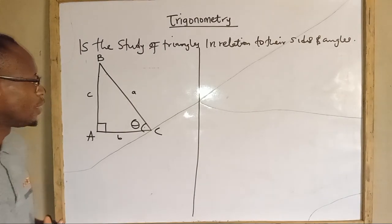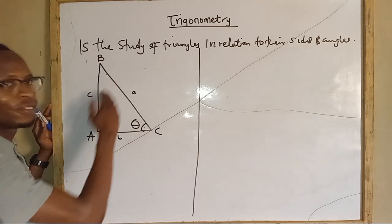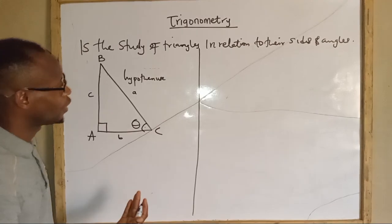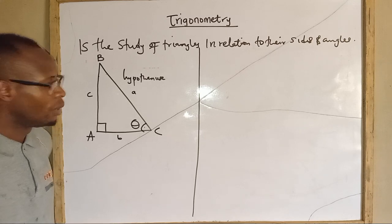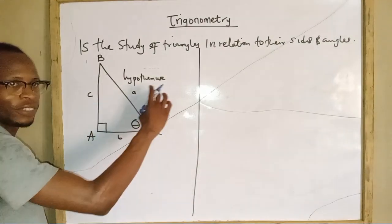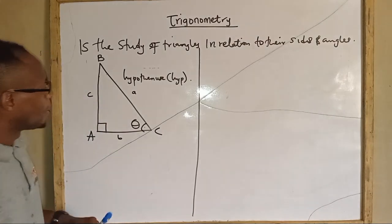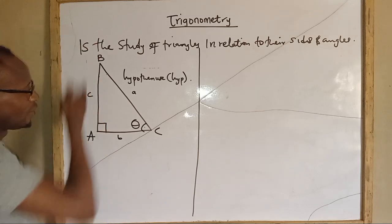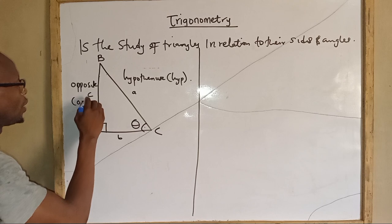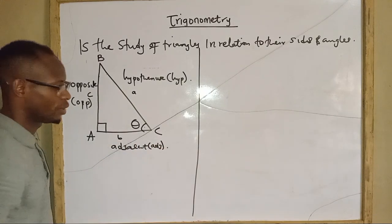Now let's talk about labeling the sides. The line where angle 90 is facing is called the hypotenuse — most people refer to it as the longest side of the right angle triangle, which is correct. We shorten it as 'hyp.' The line where angle theta is facing is called the opposite side, shortened as 'opp.' The last remaining side is called the adjacent, shortened as 'adj.'